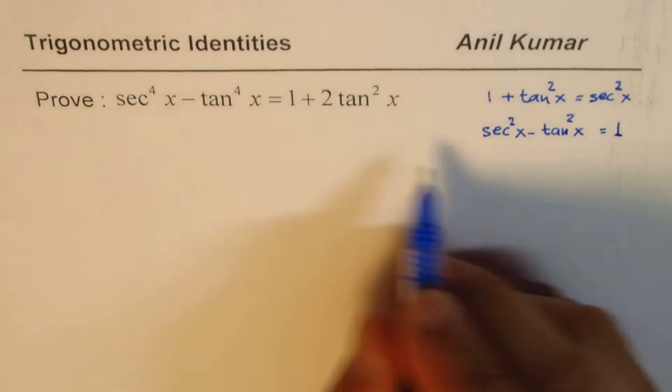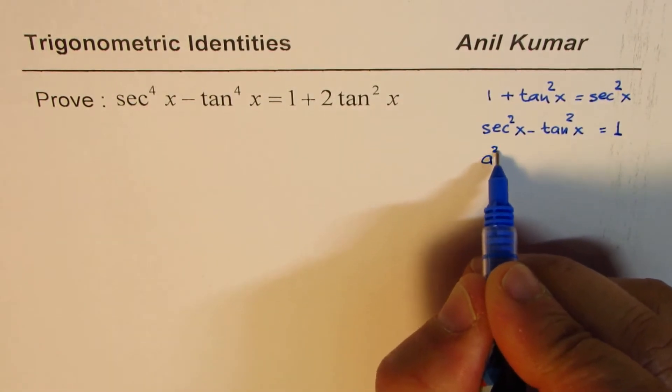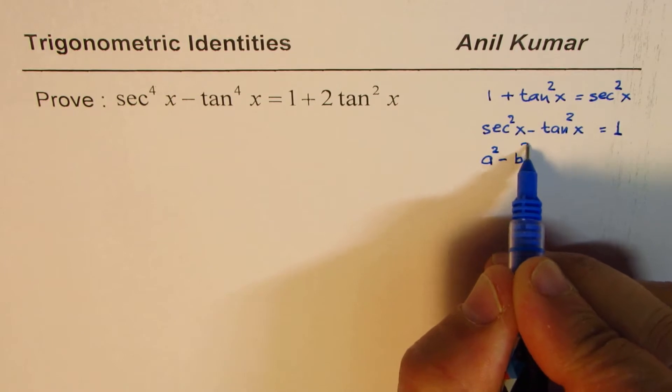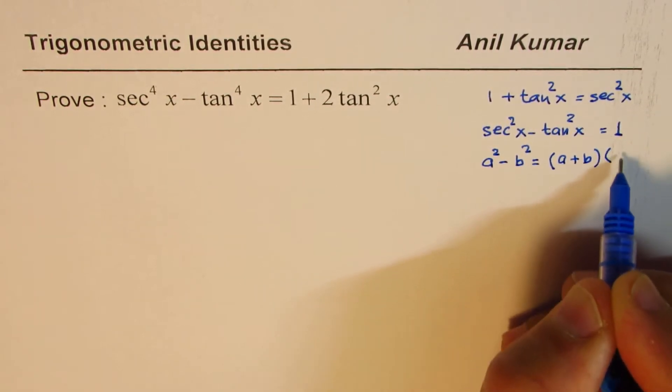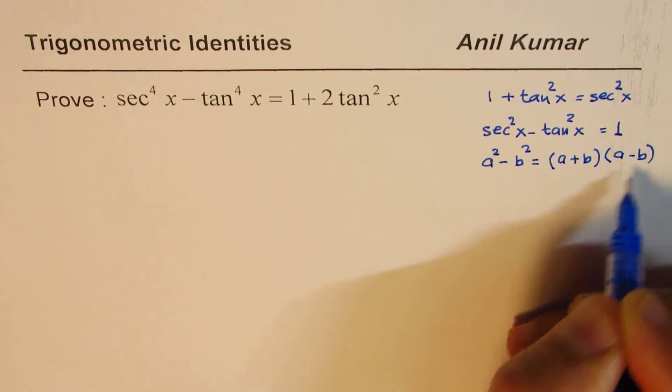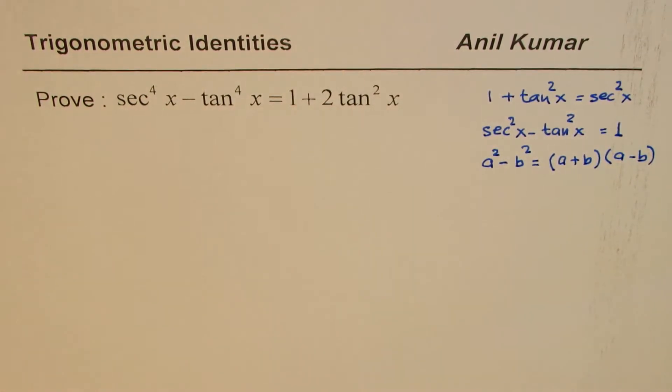Another formula which we are going to use here is a square minus b square could be factored as a plus b times a minus b. So using these formulas we can actually solve this trigonometric identity.